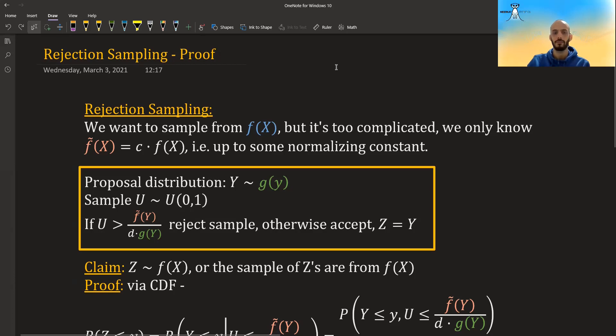Well, suppose we want to sample from some distribution f(x), which is a bit too complicated. We only know it up to some constant. It could be that we also know it completely, and it's still hard for us to sample from it, or it could be that we only know it up to a normalizing constant. So what is the algorithm?